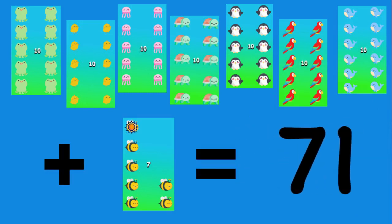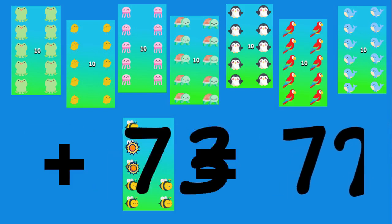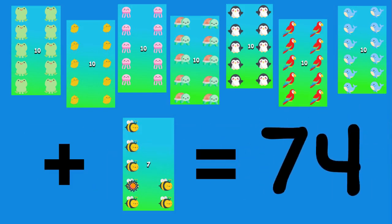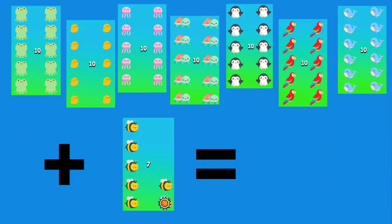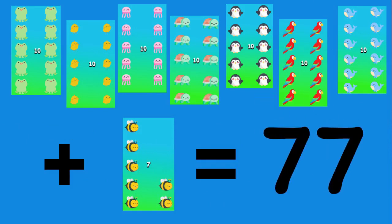Now we add the remaining ones. Seventy-one, seventy-two, seventy-three, seventy-four, seventy-five, seventy-six, seventy-seven. For a total of seventy-seven animals.